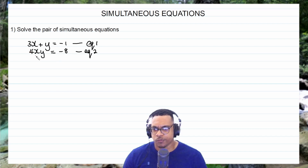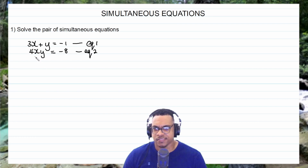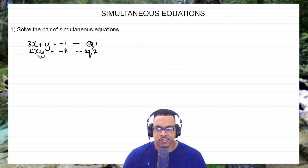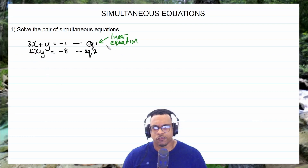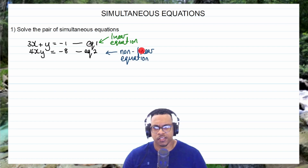In equation 2, 4xy is considered only one term because terms are separated by plus or minus signs, and there are none here. The variable x has highest power 1 and y has highest power 1. But because x is multiplied by y — two variables multiplied together — this is not a linear equation. Therefore equation 1 is the linear equation and equation 2 is the non-linear equation.